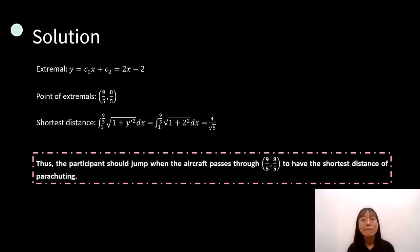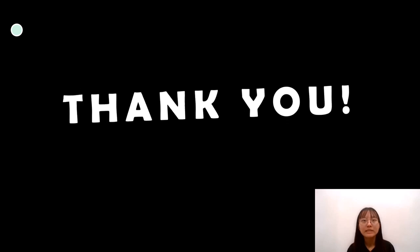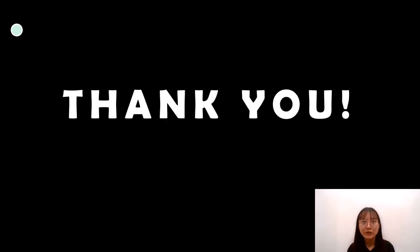Thus, we can conclude that the participant should jump when the aircraft passes through the point ((9+sqrt(5))/5, (8+sqrt(5))/5) to achieve the shortest parachute distance. That's all for our group presentation. Thank you.